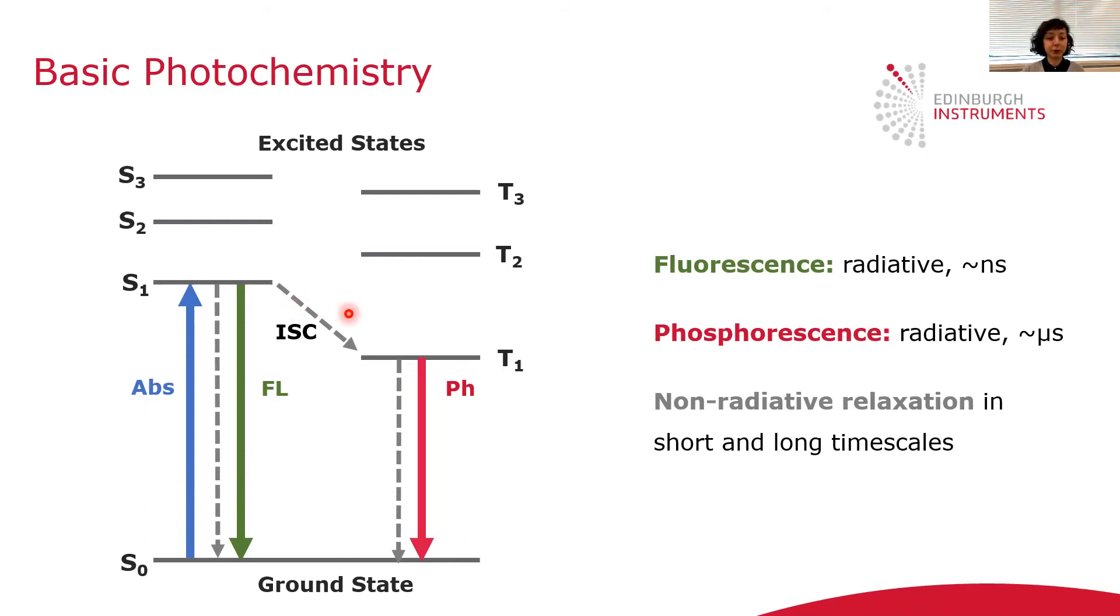Or it can move to the triplet state by inter-system crossing. From this triplet state, it can relax back to its ground state, emitting phosphorescence in longer timescales, typically microseconds.